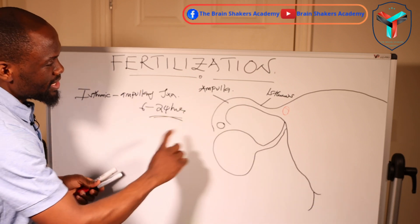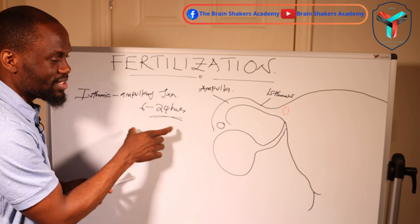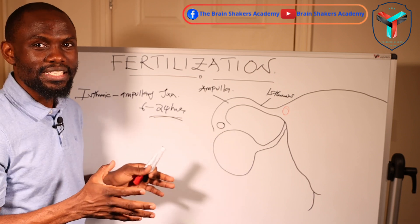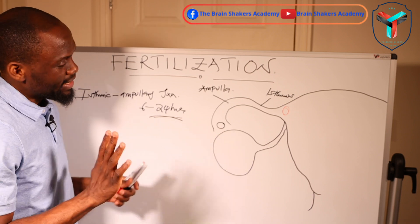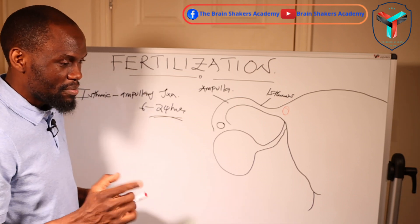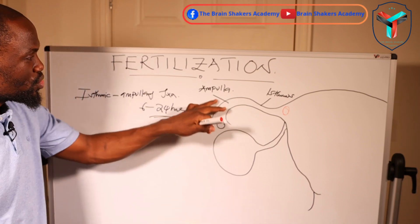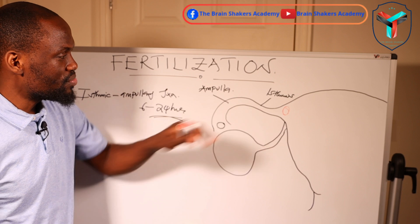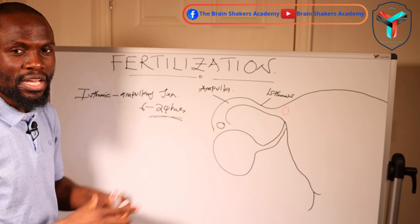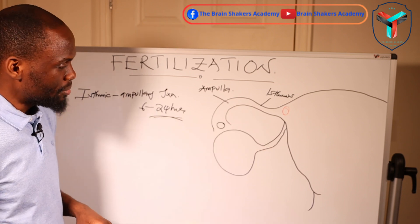It is not just timing that determines whether pregnancy will be elicited — there are many factors. Now let's look at how the sperm is transported to reach the ampulla for fertilization to actually happen.